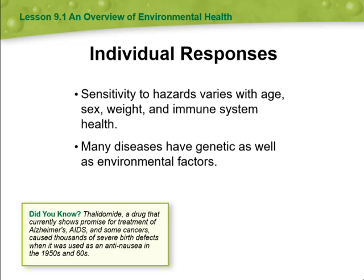Genetics. Many diseases have both genetic and environmental factors. In other words, both a person's genes and the environment he or she lives in can affect the individual's chance of suffering from the disease. For example, certain genetic mutations make it more likely for some women to develop breast cancer than others. But environmental factors can also increase the risk of getting breast cancer. If a young girl is exposed to ionizing radiation, her chances of developing breast cancer later in life increases.